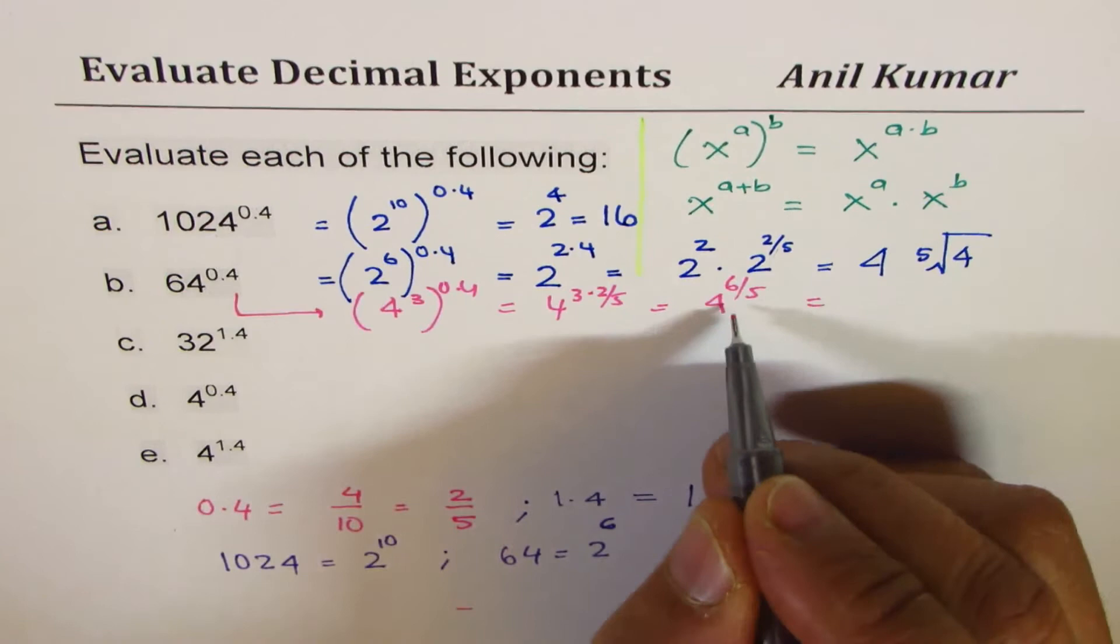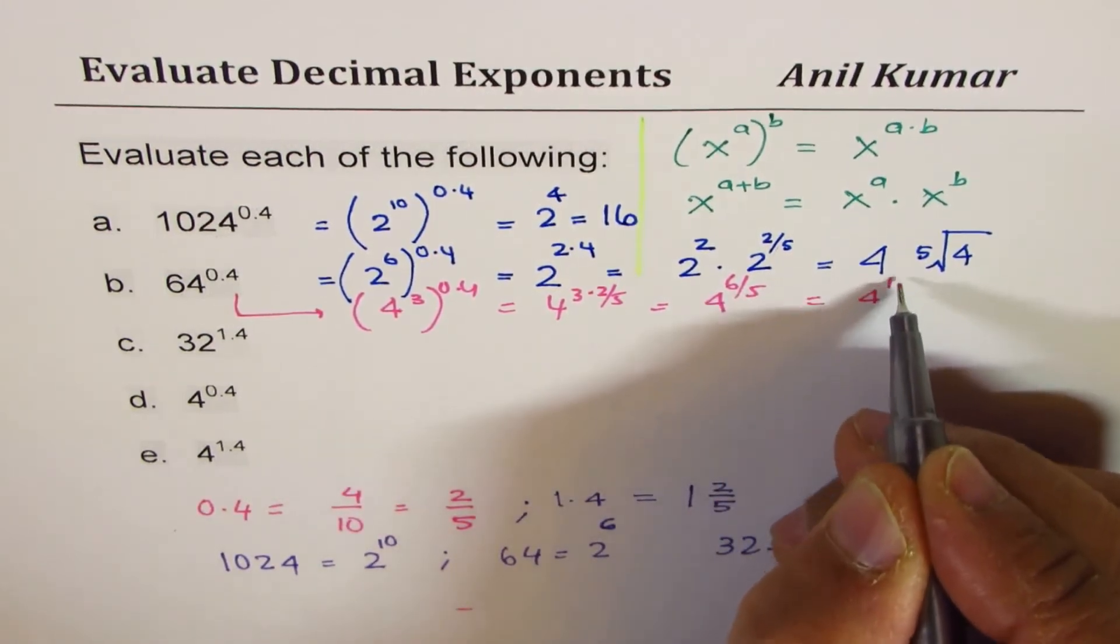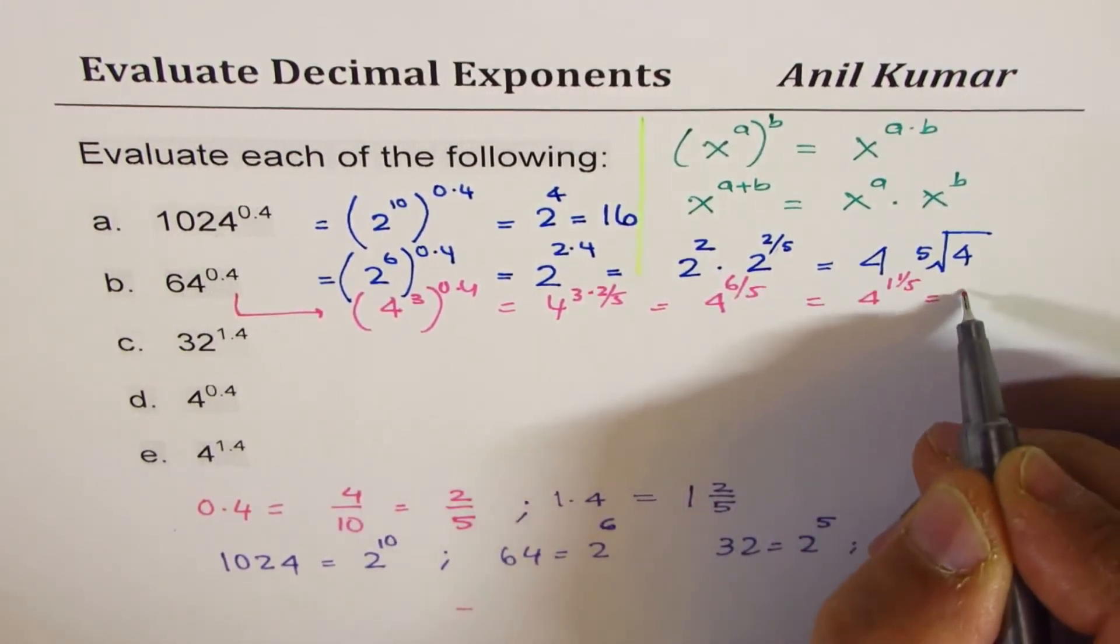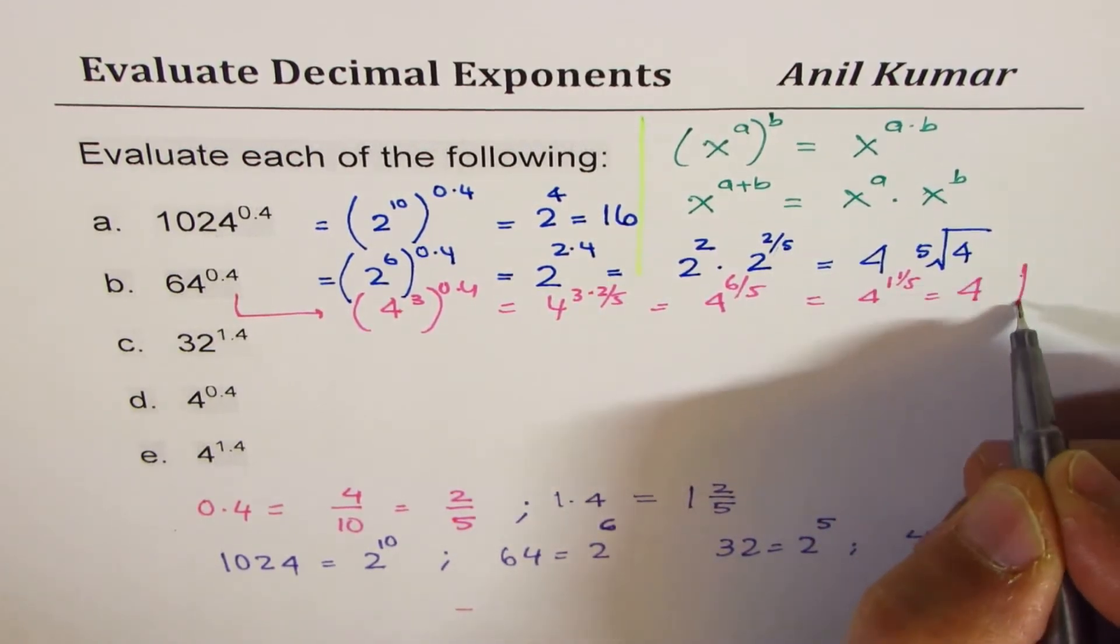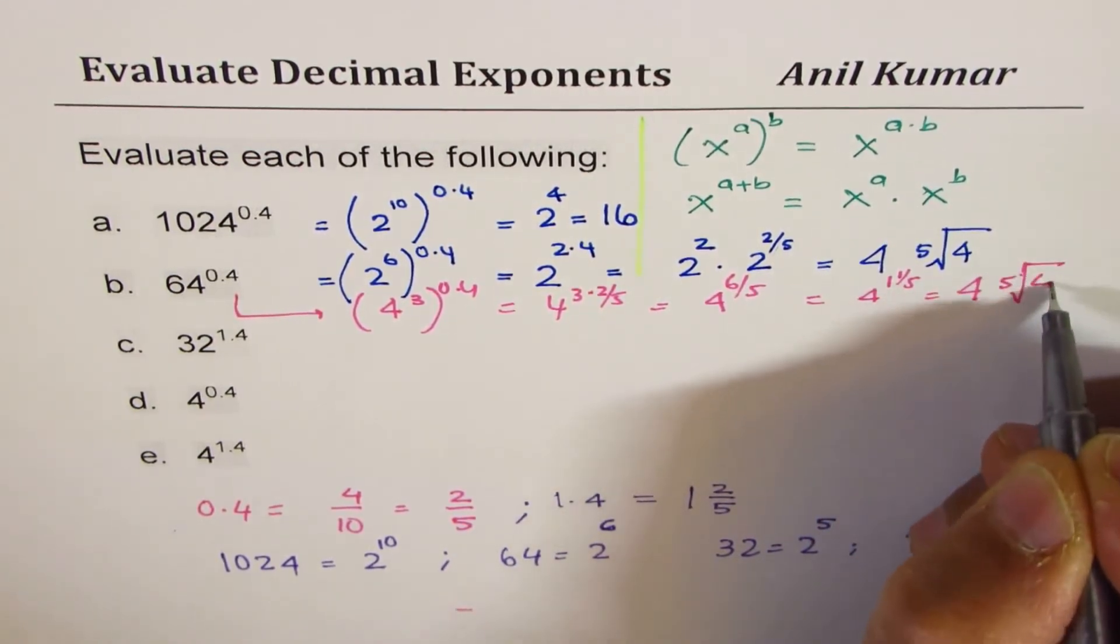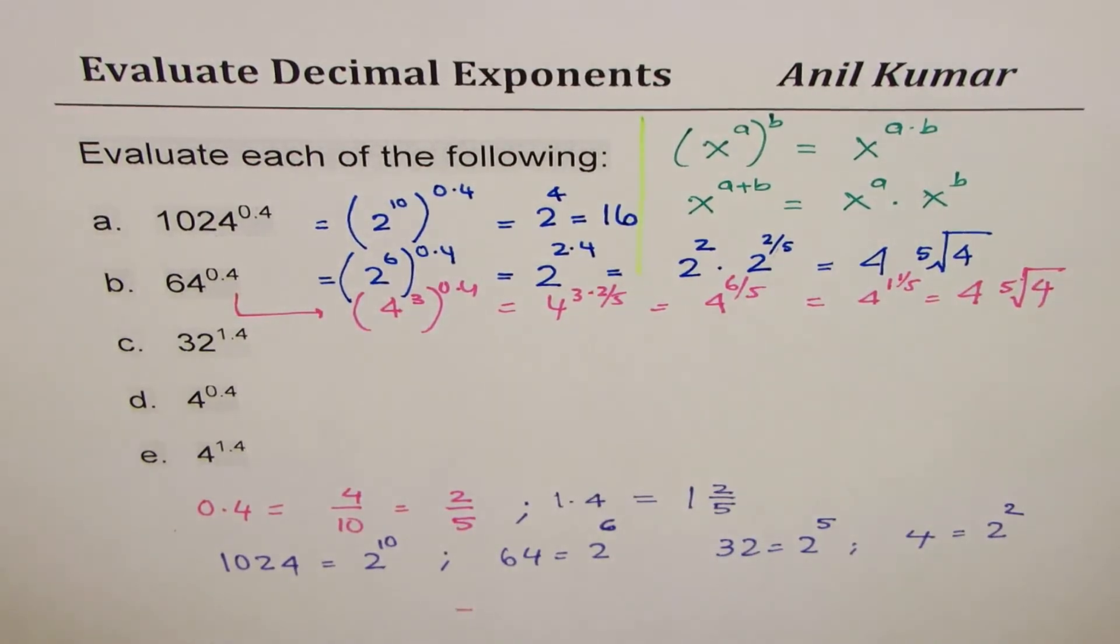6 over 5 really means 1 whole and 1 fifth. That means 4 to the power of 1 is 4 and the fifth root of 4. Does it make sense to you? So that could be an alternate solution, which is actually a better solution. Okay. So there are many ways to do it.